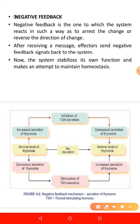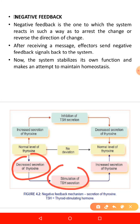Whenever thyroxine decreases, we don't want low levels either, because we want metabolic rate to be controlled. The low levels of thyroxine will be sensed by the TSH cells, which will increase the synthesis and release of thyroid stimulating hormone. TSH binds on the thyroid gland and increases thyroxine secretion back to normal. This is just one example of the millions of homeostatic mechanisms taking place in the human body.